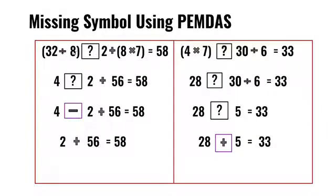32 divided by 8 inside parentheses, question mark, 2 plus 8 times 7 inside parentheses equals 58.